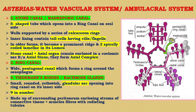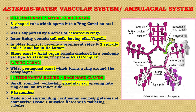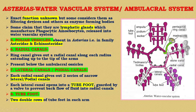The next part is the ring canal, a wide pentagonal canal which forms a ring around the esophagus. Next are Tiedmann's bodies or racemose glands — small, rounded, yellowish glandular sacs opening into the ring canal on its inner side. These are nine in number, as one is missing where the stone canal opens into the ring canal. They are made up of connective tissue and muscle fibers with radiating tubules. Their exact function is unknown, but some consider them as filtering devices, others as enzyme-forming bodies, and some workers claim they manufacture phagocytic amoebocytes released into the water vascular system.